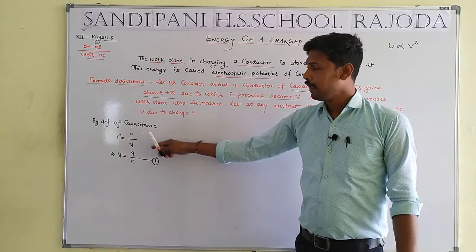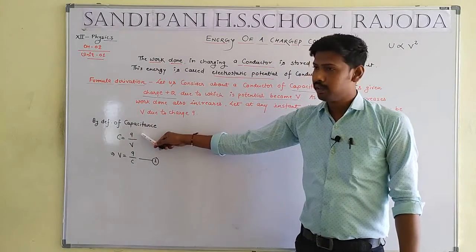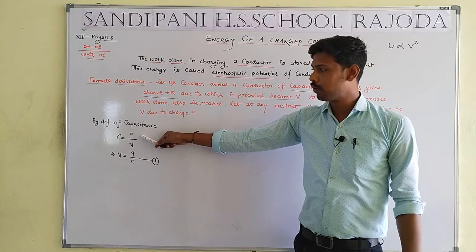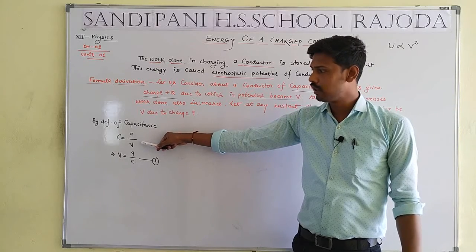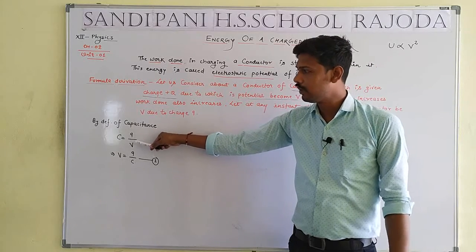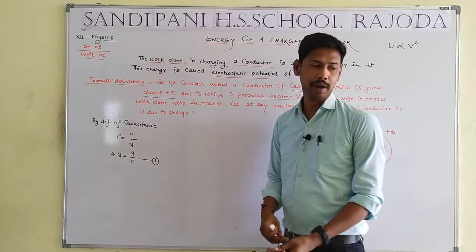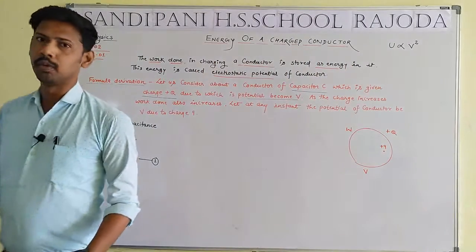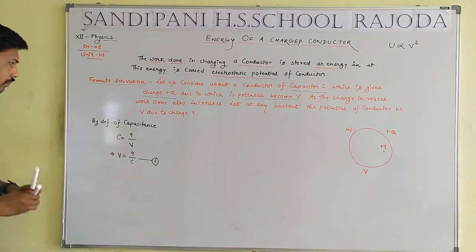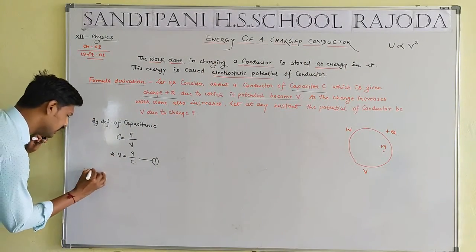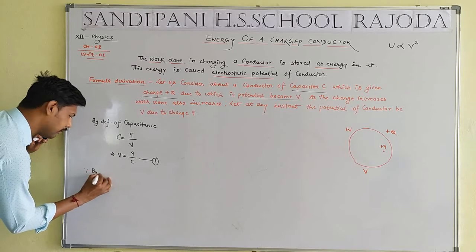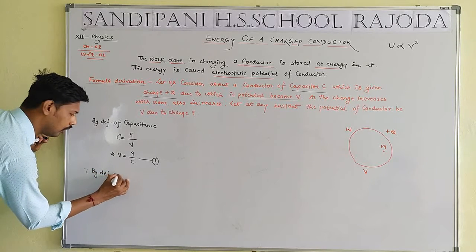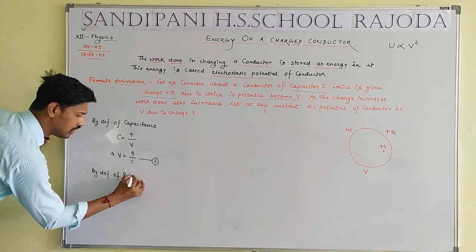C equals Q by V — the value of capacitance is the ratio between the amount of charge and potential. Then we get V equal to Q by C. Now by the definition of potential, we can write V equal to W by Q — Equation Number 2 setup.